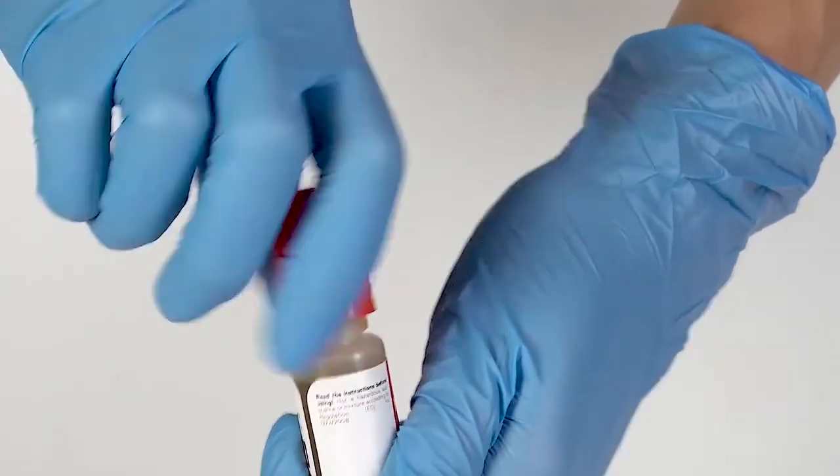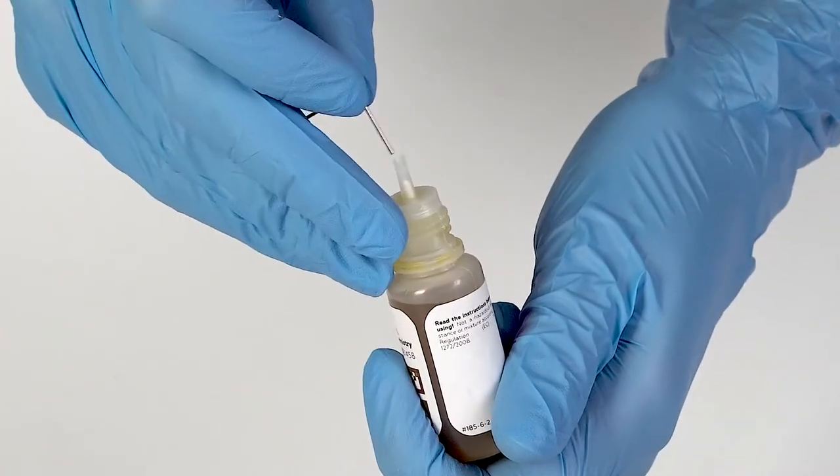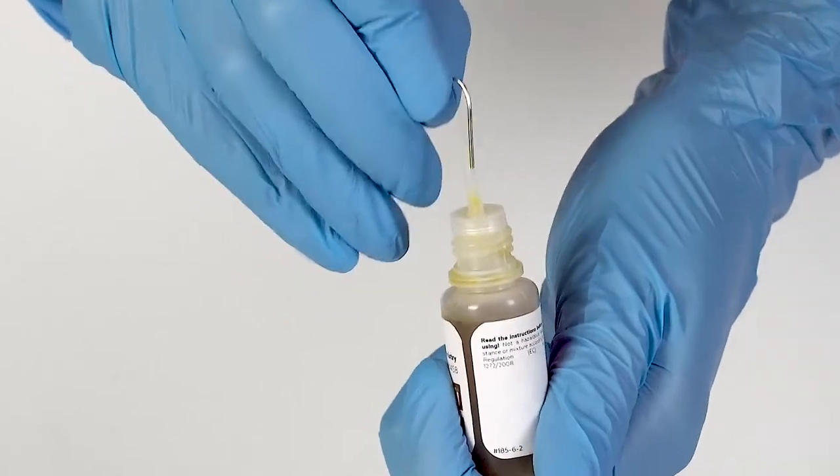To open a bottle containing a reagent, push the cap down and turn it. Pierce the bottle nozzle with an unbent paperclip.